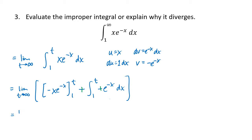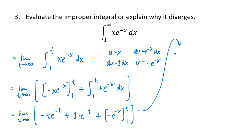So we're going to have uv, which is minus x e to the minus x, evaluated at t and at 1, minus the integral from 1 to t of v du, that's minus e to the minus x dx. Minus a minus is a plus, so these turn into pluses. We plug in t to get minus t e to the minus t, and minus a minus is a plus, giving 1 times e to the minus 1. The antiderivative of e to the minus x is minus e to the minus x, evaluated from 1 to t, giving minus e to the minus t at t and plus e to the minus 1 at 1.